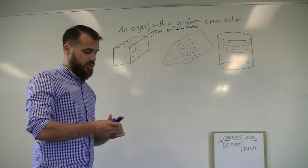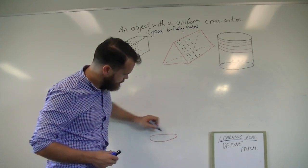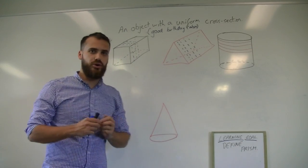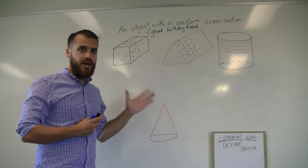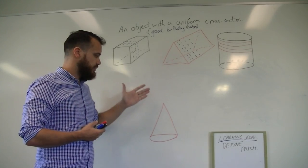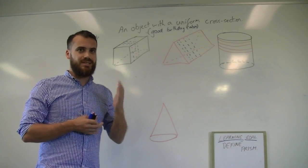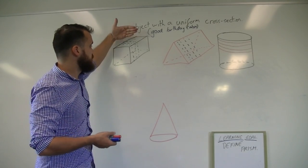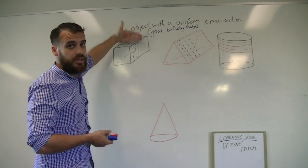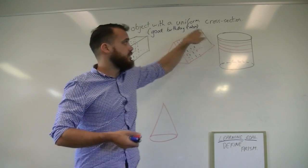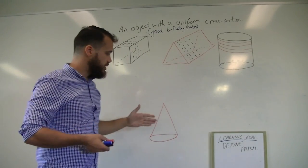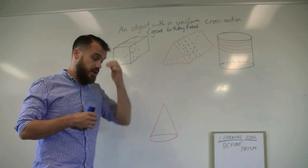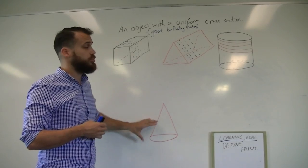I'll briefly show you something that's not a prism so you can see the difference. There's a cone. Now, it doesn't matter how you slice that — you're not going to be able to give people the same sized slice, not without turning your knife at least. With all of these prisms, you can keep your knife in one direction and cut. With the cone, the only way you could do it would be to slice through the middle and then sort of turn and give people little wedges of cake. So this is not a prism.